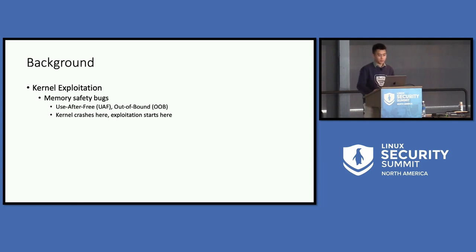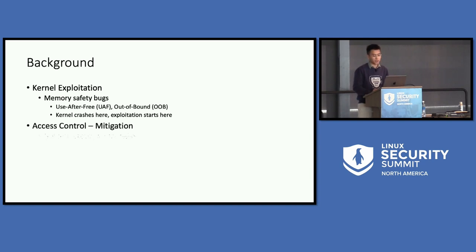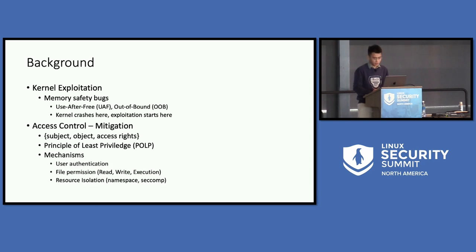For the background, the kernel is always under exploitation mostly because of some memory safety bugs such as use-after-free, out-of-bounds, or generally speaking dangling pointers that point to places they should never point to. The kernel will crash because of memory safety bugs, and exploitation will start from there. One way to mitigate kernel exploitation is to use access control, which determines access rights for a subject to an object, ideally following the principle of least privilege. We are all familiar with high-level mechanisms such as user authentication, file operations like read-write-execute, and resource isolation mechanisms like namespaces and seccomp.